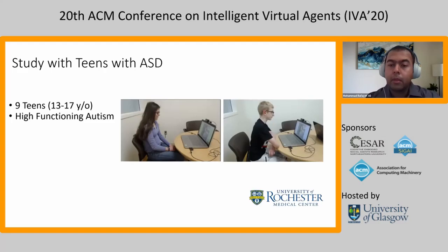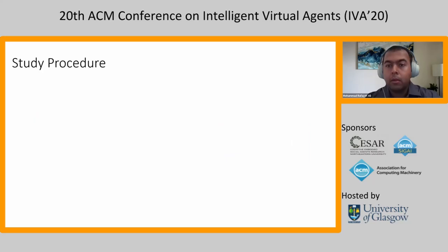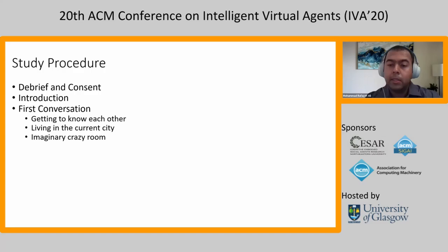We then used this automated Lisa system to conduct a study with teens with ASD. This was not a randomized control study. Our target was to understand whether the system can be perceived as useful to individuals with ASD, and to know what design modifications are necessary. We recruited nine teenagers with high functioning autism. The participants were recruited through the University of Rochester Medical Center, and parents were also invited in each session, one participant at a time. During each study session, we first had a debrief and consent where the parents were present. Then Lisa introduced herself, and after the introduction, Lisa had a round of conversation covering three topics: getting to know each other, living in the current city, and an imaginary crazy room.